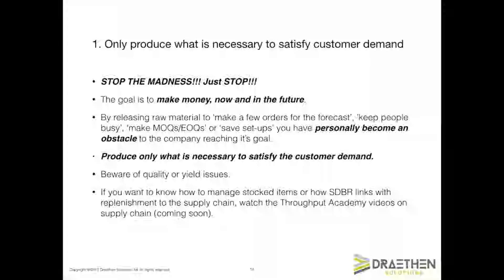Even after implementing SDBR, sometimes old habits die hard. Planners or supervisors may increase batch sizes to cover for orders that they think might materialise, or create batches more like economic order quantities. From an SDBR perspective, this is simply unnecessary overproduction. When we have a CCR preventing further improvement, overproduction reduces the available capacity on the CCR to process work orders which actually have customer names associated with them. Only produce what is necessary to satisfy customer demand — no inflating batches to make EOQs, no releasing work to the plant to cover for as yet unconfirmed orders. Auditing a small sample of work orders and comparing what was released and made versus the quantity required by the customer is strongly recommended.